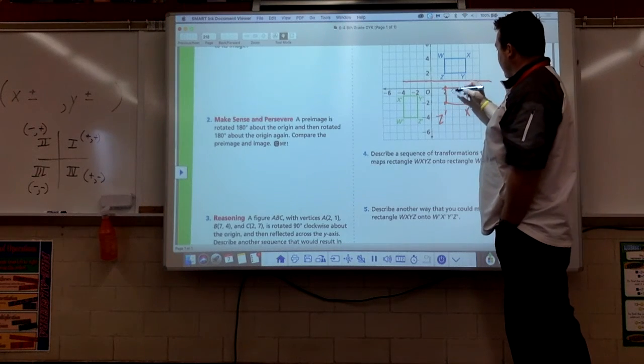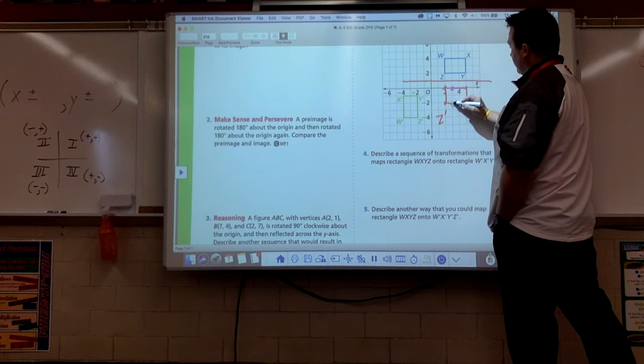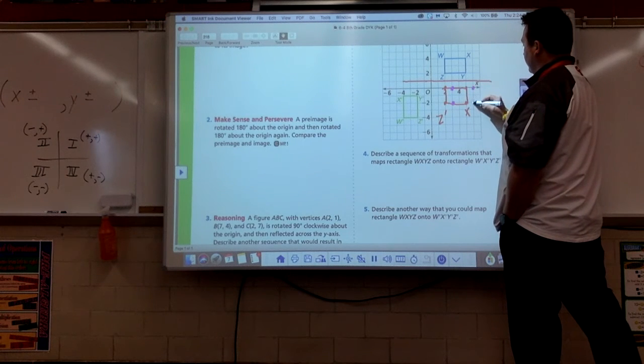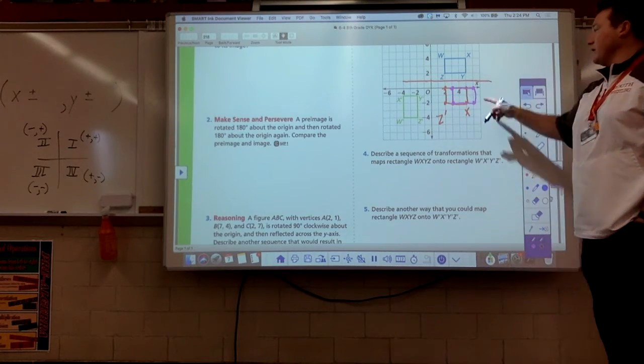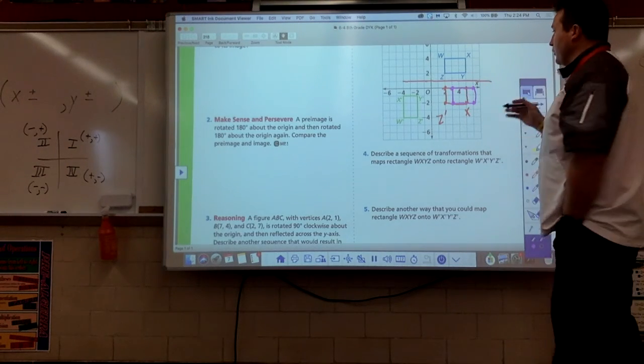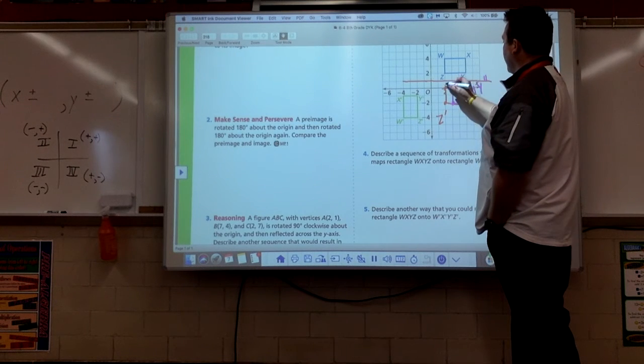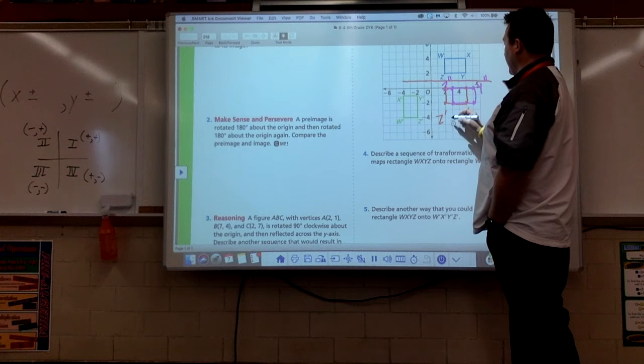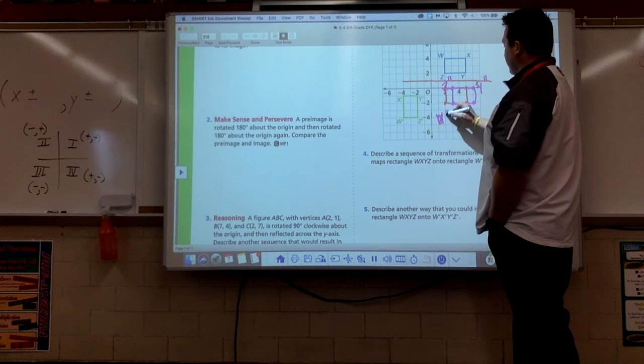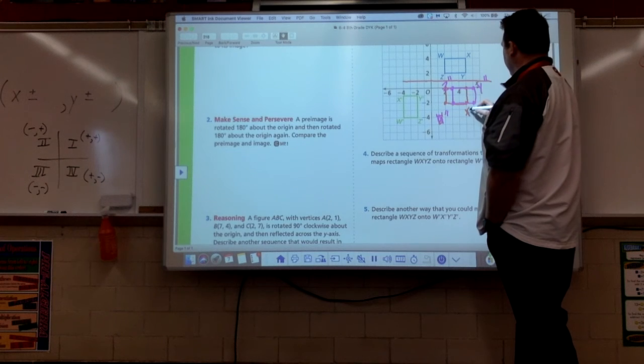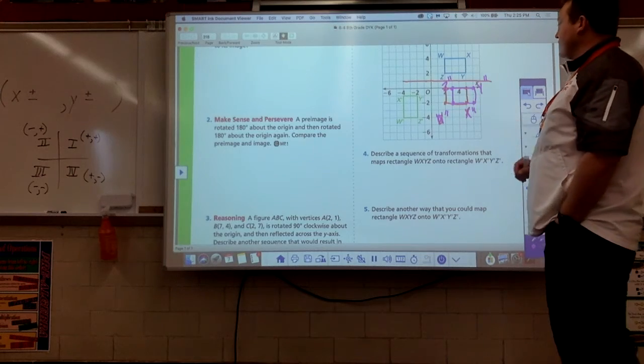So that means it's going to end up here. We'll go a different color for you. There we go. Bam. So there's where it ends up. Again, we could notate this with double prime marks. So this is going to be Y double prime, Z double prime. This will be W, X double prime. We're just writing on top of each other. There you go.